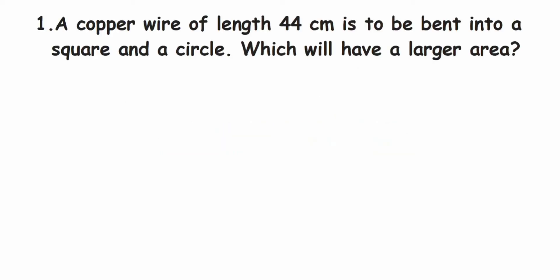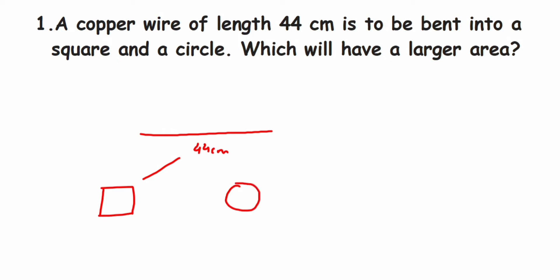The first question: a copper wire of length 44 centimeters is to be bent into a square and a circle — which will have a larger area? We have a wire of 44 centimeters. It is turned into a square and into a circle. Since the same wire is used, the perimeter of the square will be 44 centimeters, and the circumference of the circle will also be 44 centimeters.